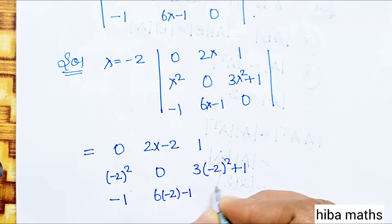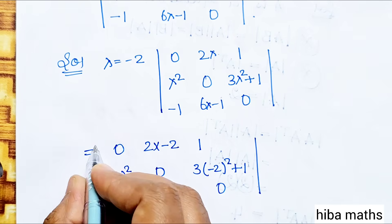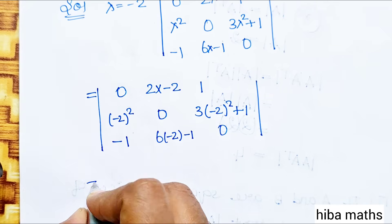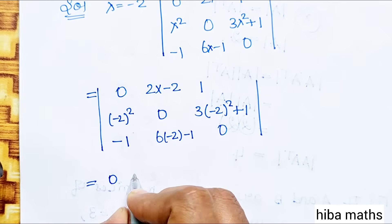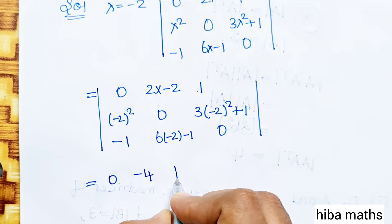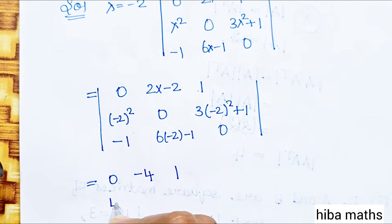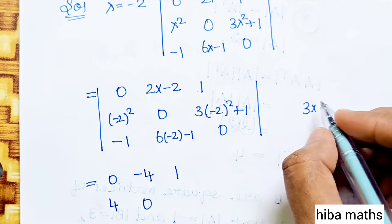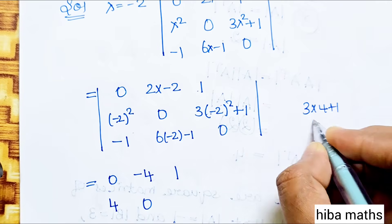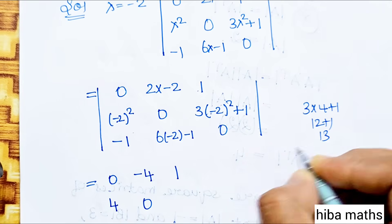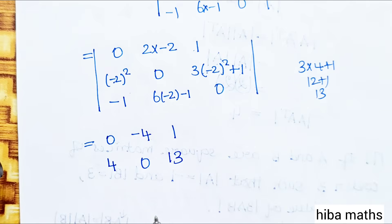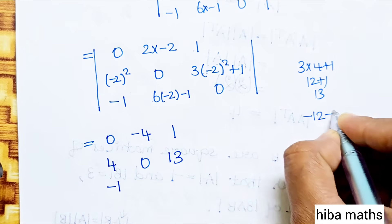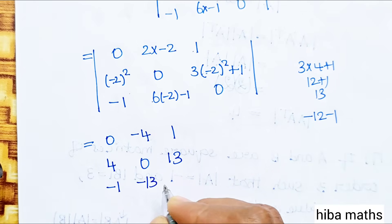After substituting λ = −2, we compute each entry: 2×(−2) = −4; (−2)² = 4; 3×(−2)² + 1 = 3×4 + 1 = 12 + 1 = 13; 6×(−2) − 1 = −12 − 1 = −13. So the matrix is: 0, −4, 1; 4, 0, 13; −1, −13, 0.